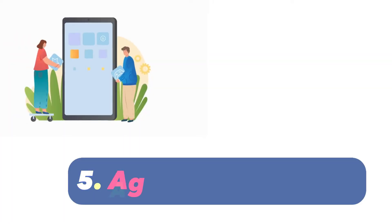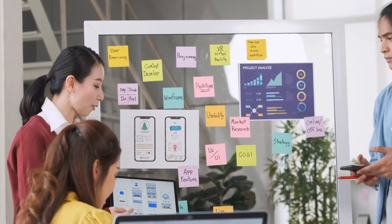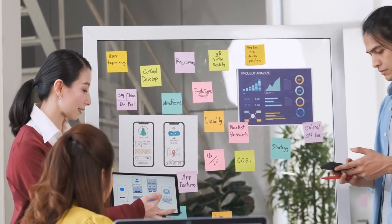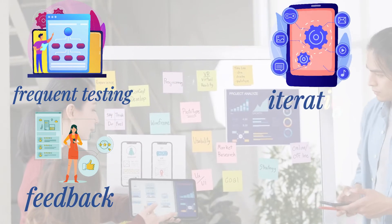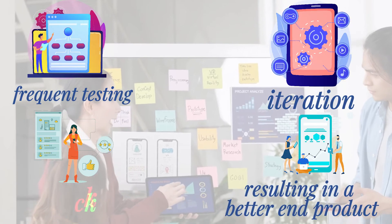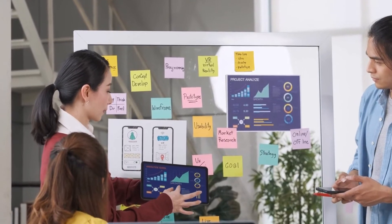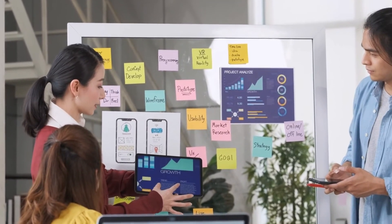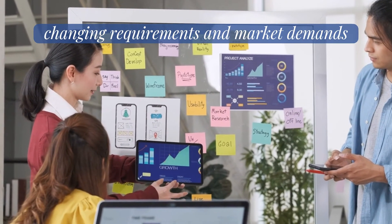The fifth best practice is to adopt agile development methodologies. Agile development allows for frequent testing, feedback, and iteration, resulting in a better end product. It also enables developers to respond quickly to changing requirements and market demands.